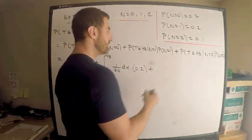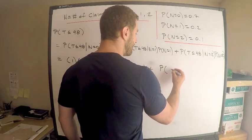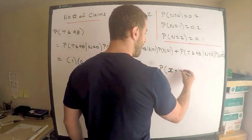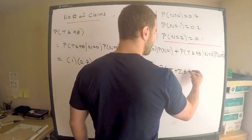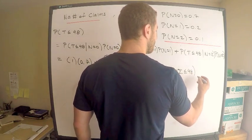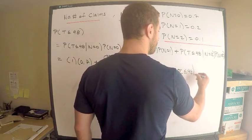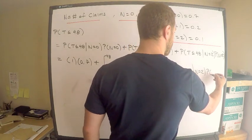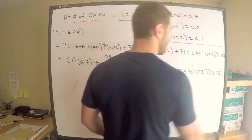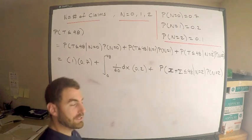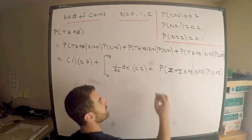plus, draw a picture. I'm going to write this out first. This is equal to the probability that X plus Y is less than or equal to 48 given N is two times probability N is two. So, this is picture time right here. This right here, draw a picture.